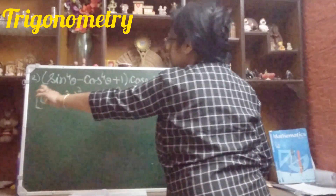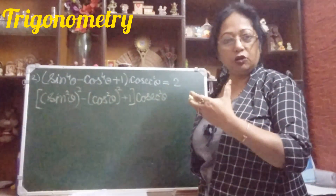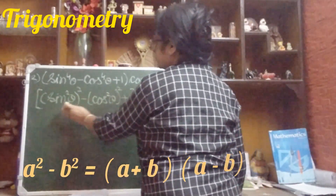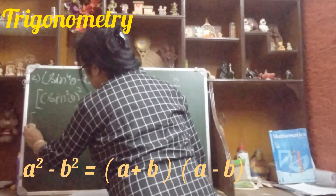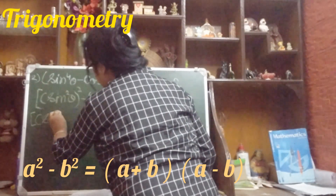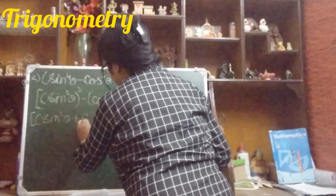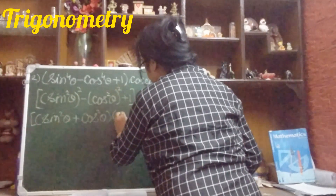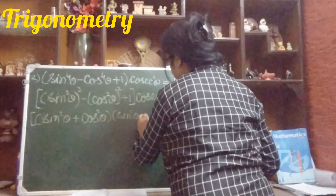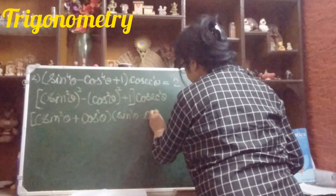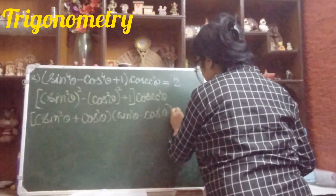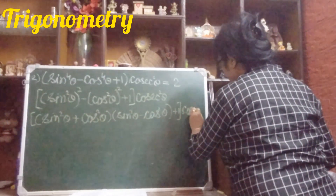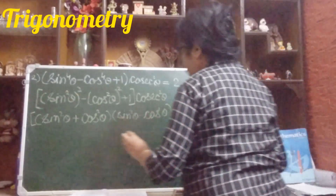Please write LHS first — copy down the left hand side from the question, then do it. Again we apply the a² minus b² formula and write: (sin²θ + cos²θ)(sin²θ − cos²θ) plus 1, all multiplied by cosec²θ. And sin²θ + cos²θ equals 1, so we write 1 there.